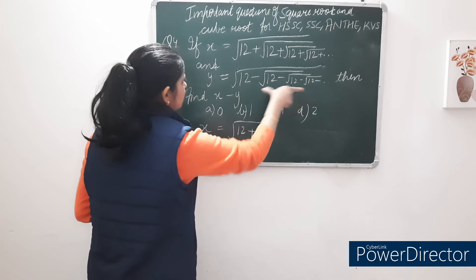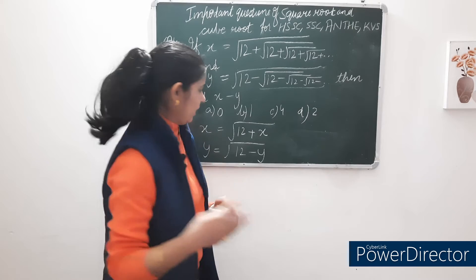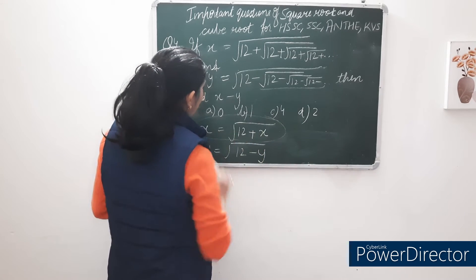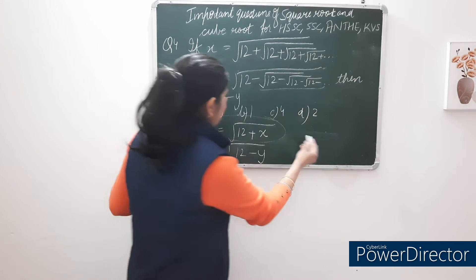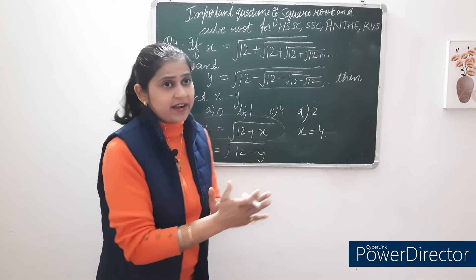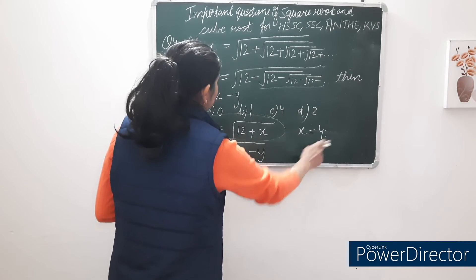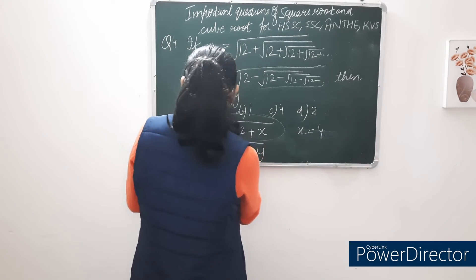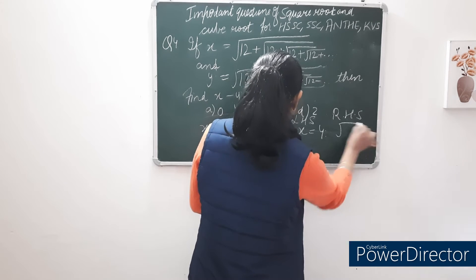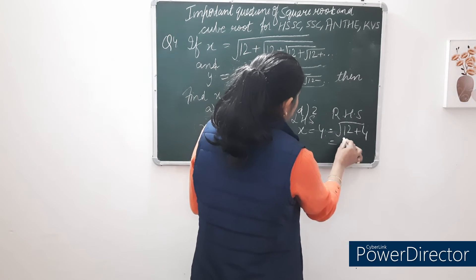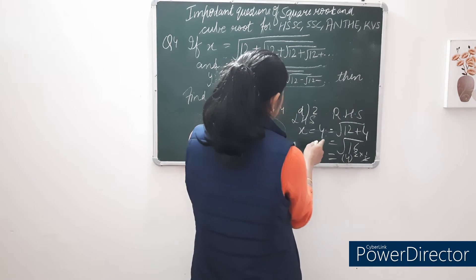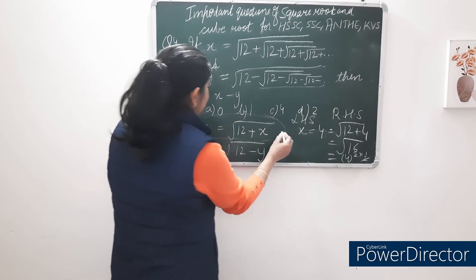Similarly, y = √(12 − y). Now we test which value of x satisfies the equation. If x = 4: right hand side = √(12 + 4) = √16 = 4, and left hand side = 4. So LHS = RHS. Therefore x = 4 is the solution.